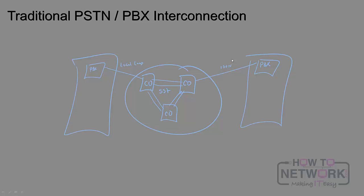When a call is placed from your PBX — with traditional handsets hanging off the back — let's say handset A wants to call handset B. The call is going to go through the PBX, out to the PSTN, across these various CO interconnections and CO trunks, and ultimately work its way to the remote site's PBX to ring the phone that was dialed.